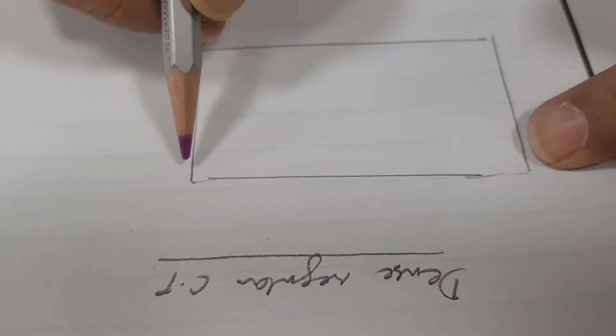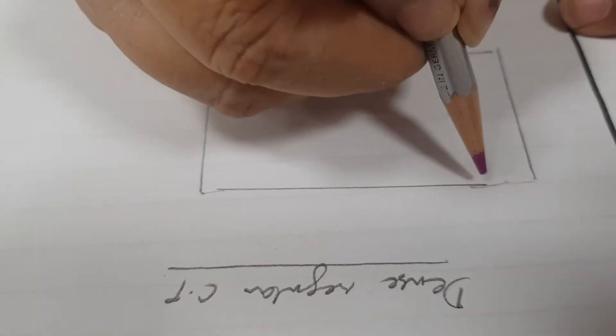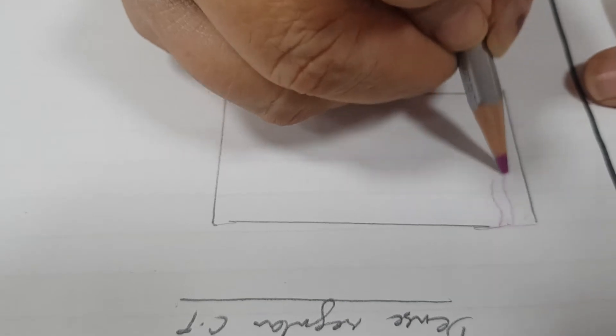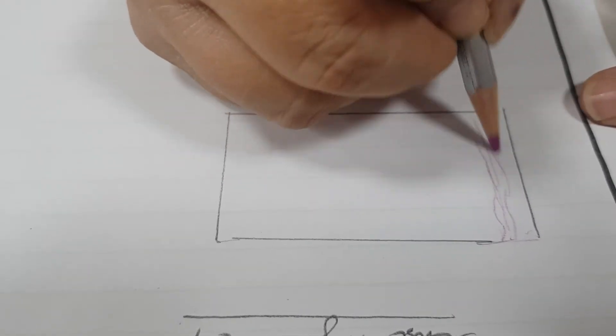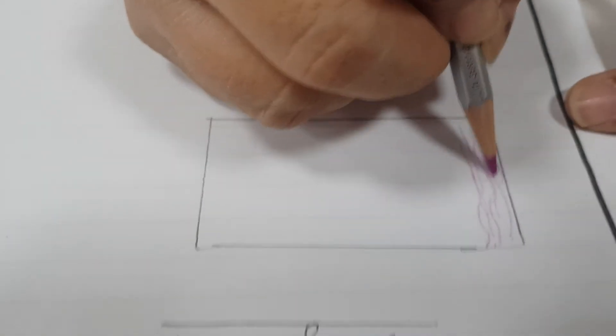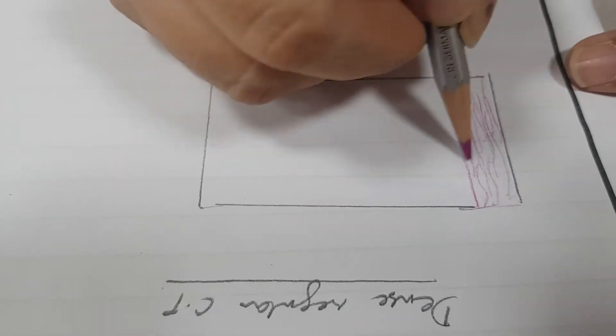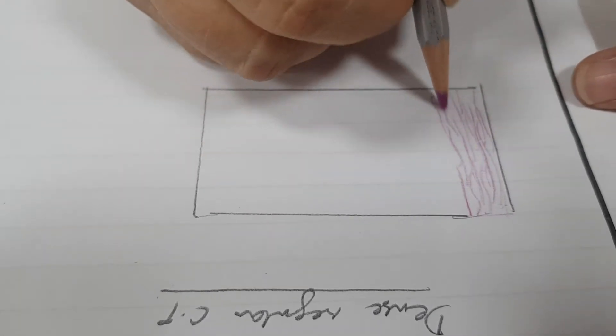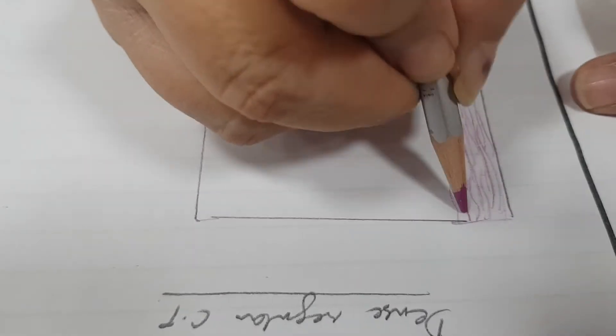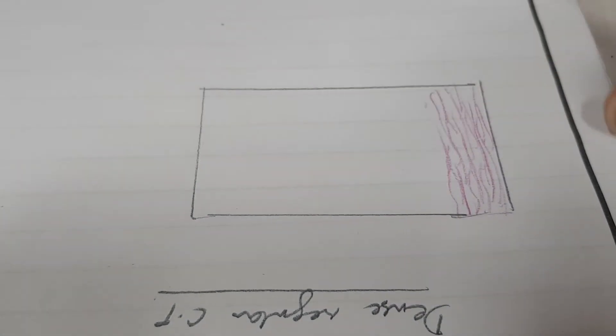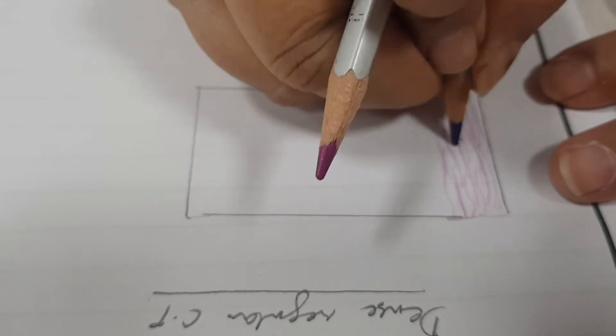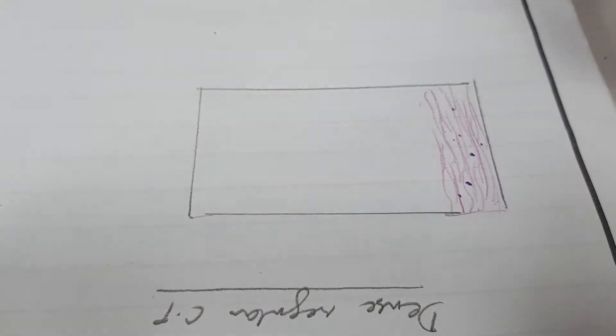Dense regular connective tissue — we just make an outline to beautify the diagram. It is surrounded by dense irregular connective tissue, which is the epitendinium, because we are showing the side of the tendon. So, we are drawing a tendon here. This is the epitendinium, which is dense irregular connective tissue.